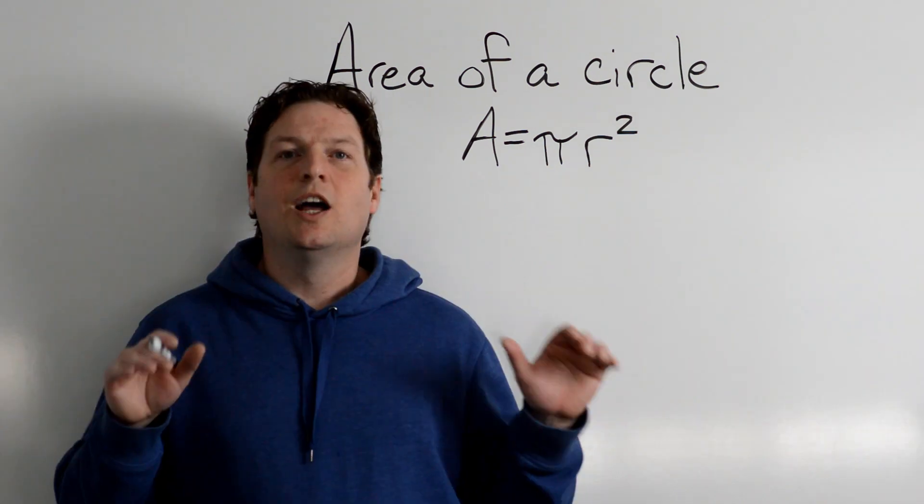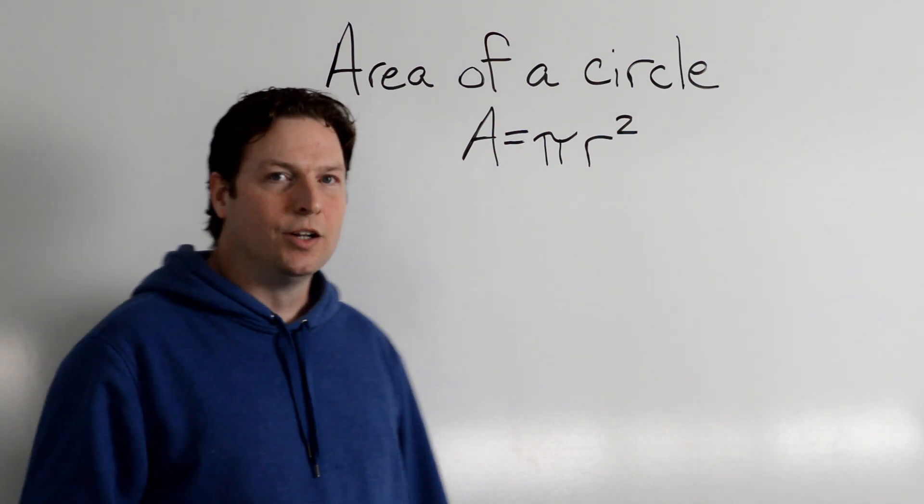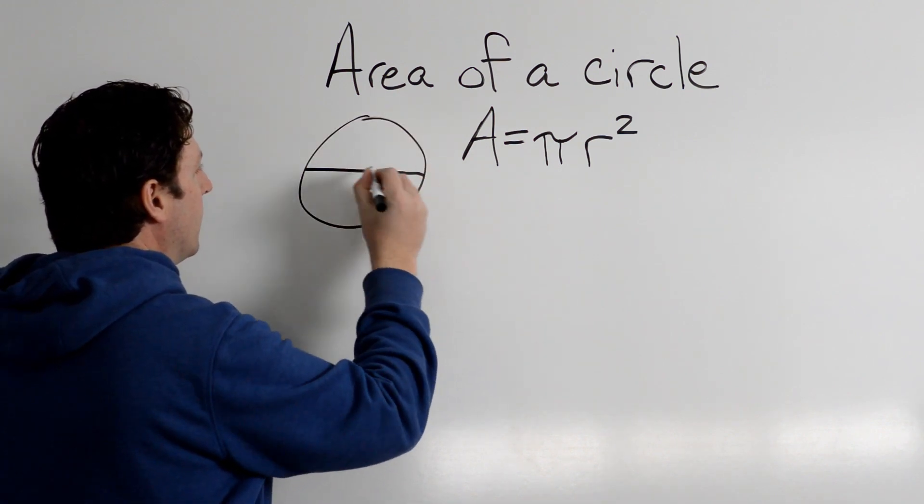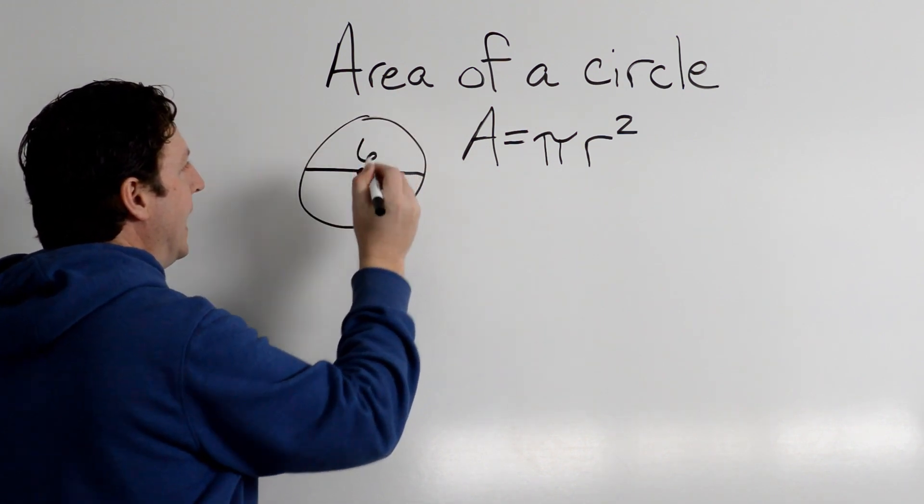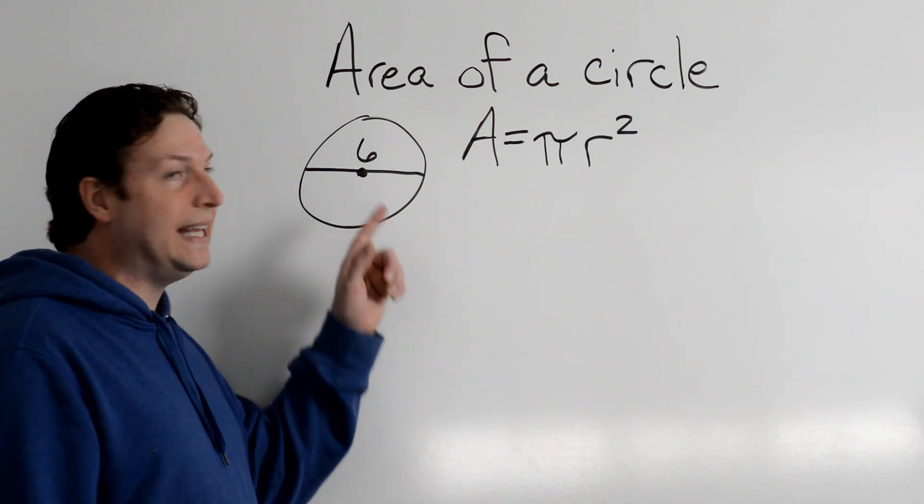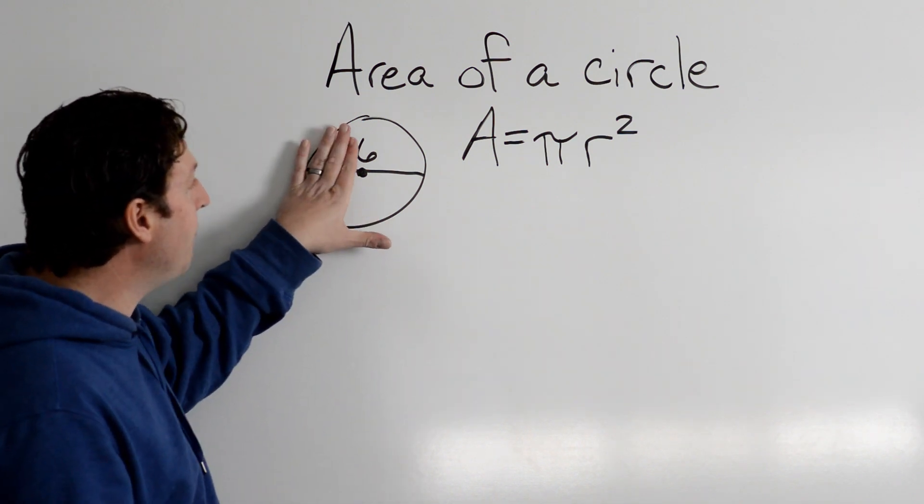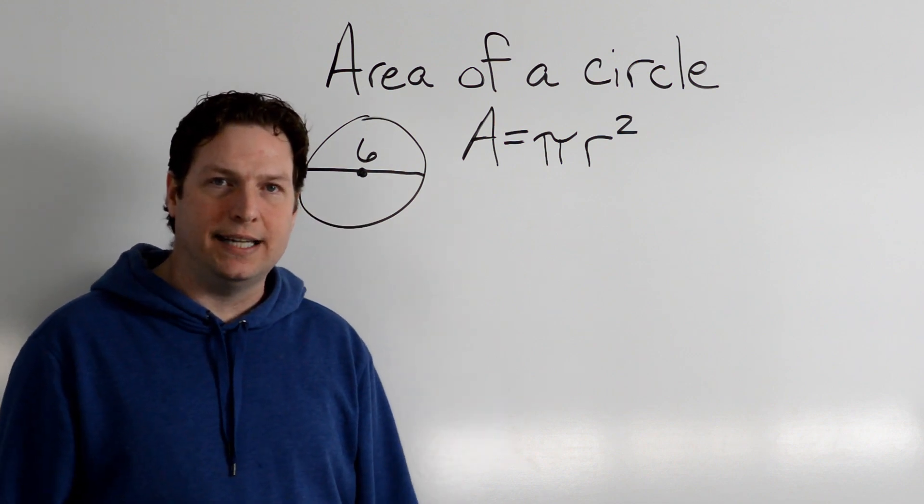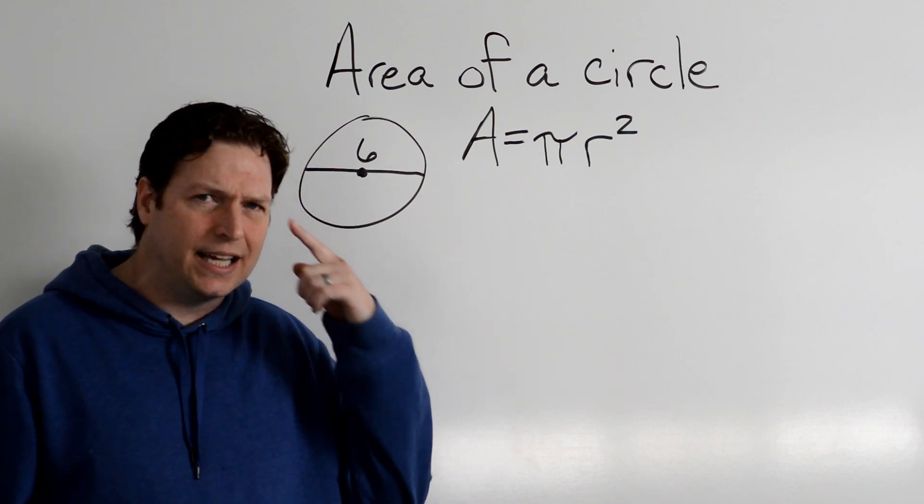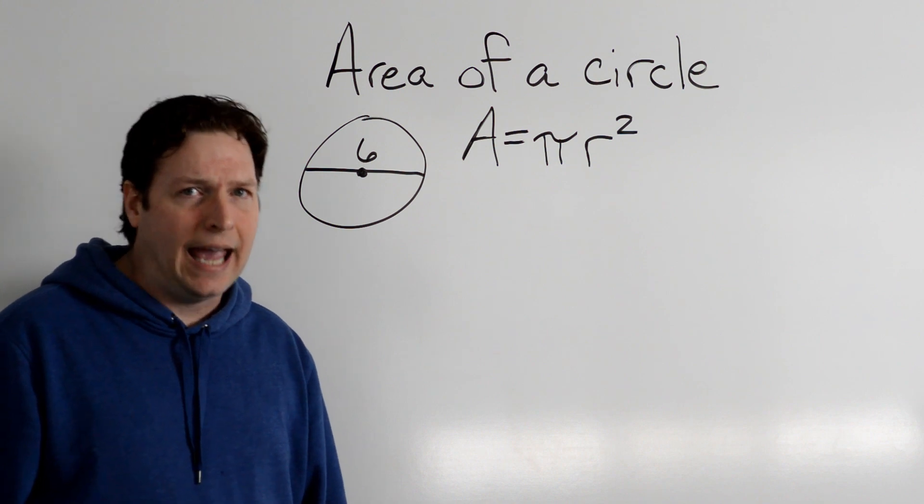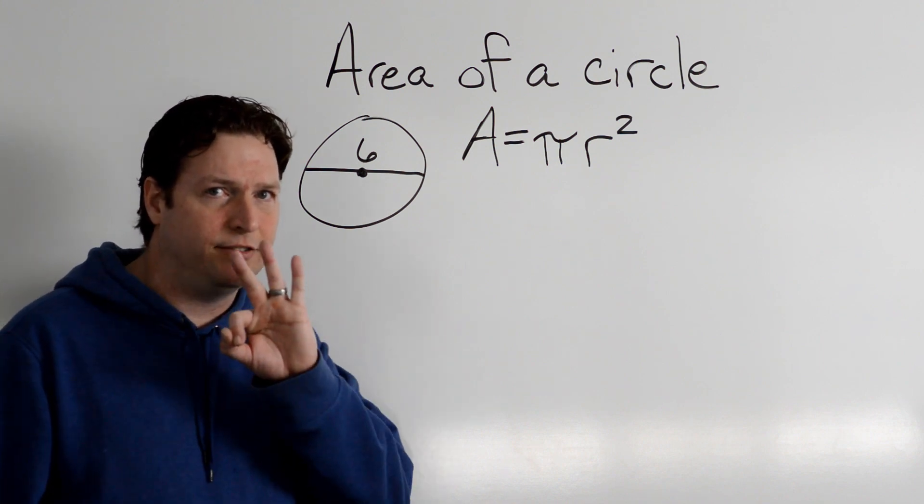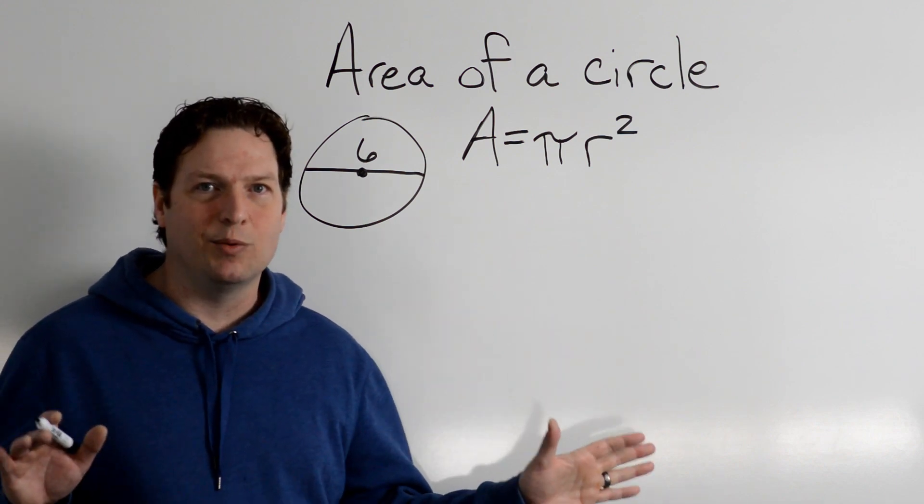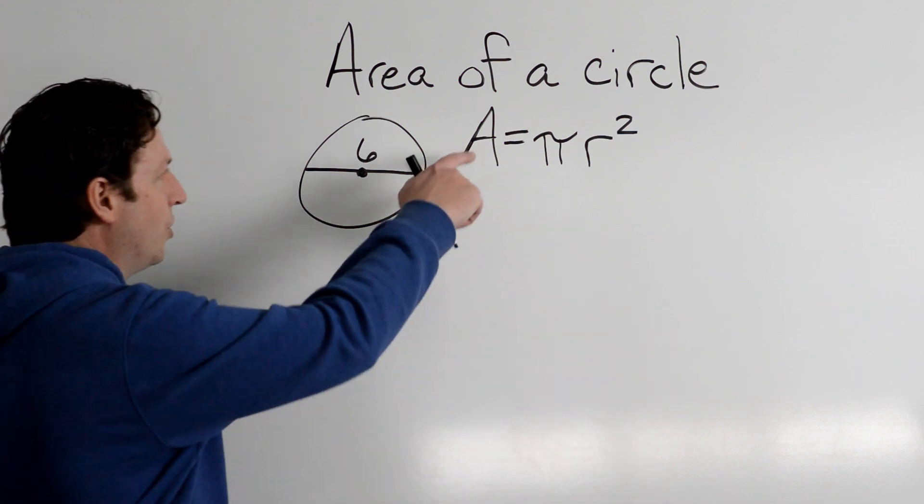Let's do another one, another quick example here. What if we have a circle and they give us a diameter? We know the radius is half of that. So if the diameter is 6, we can really just think about it and take half of 6, and that gives me 3, which is the radius. And now we have everything we need to find the area.